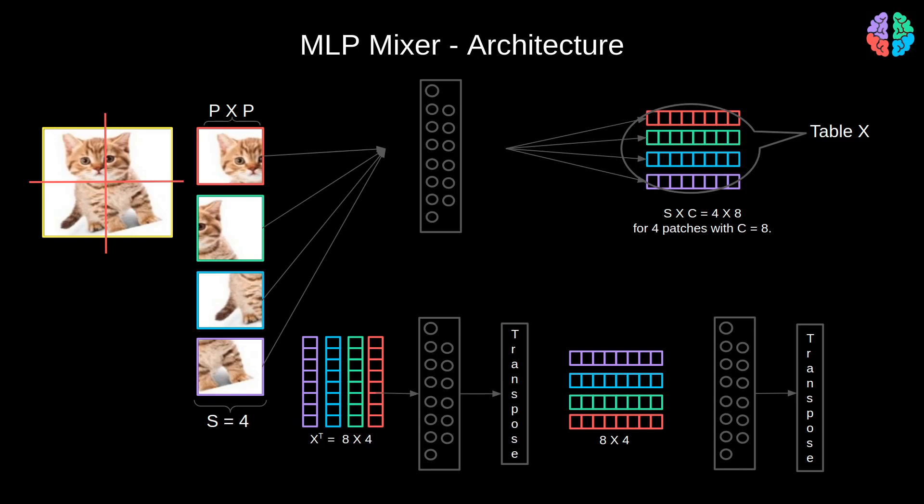Each mixer layer is composed of the token mixing MLP and channel mixing MLP. The idea is very simple. We transpose the table X to form X transpose and pass it through the token mixing MLP. Then we once again transpose the output and pass it through the channel mixing MLP.